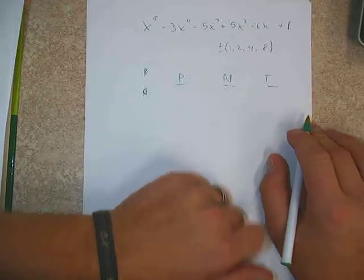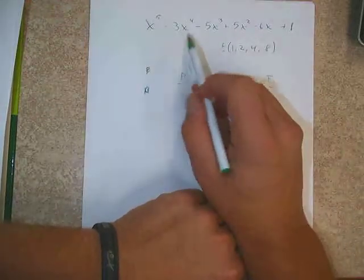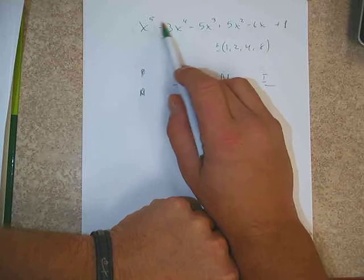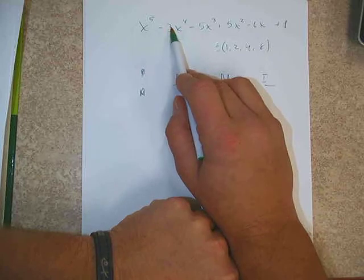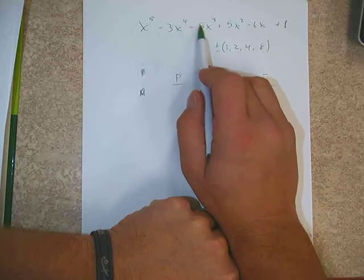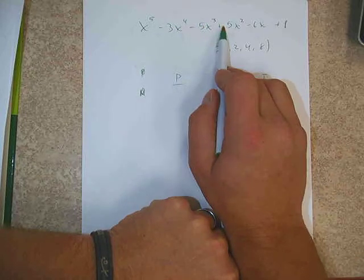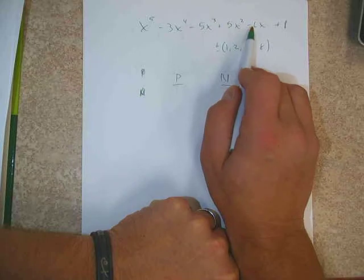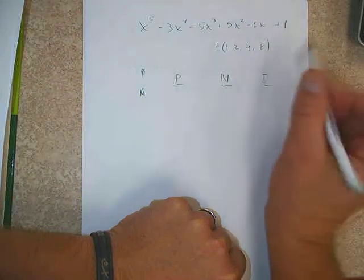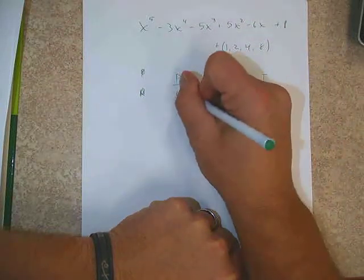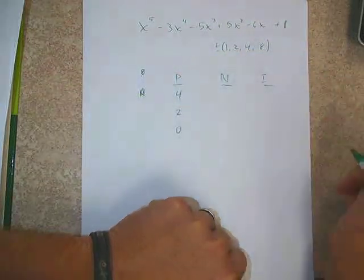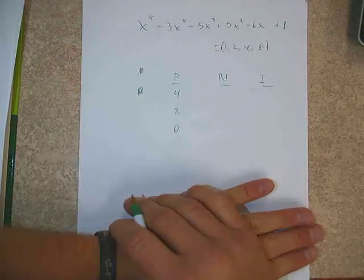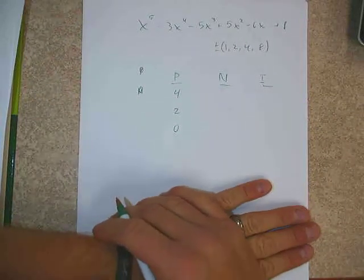If we use Descartes' Rule of Signs we can tell how many positive roots this might have. Going from here to here — no sign change. Then yes, that's 1. Yes, that's 2. Yes, that's 3. Yes, that's 4. So in my diagram I'm going to outline how many roots I might have.